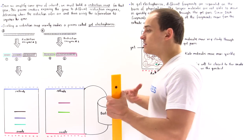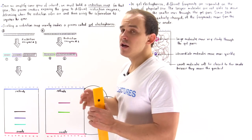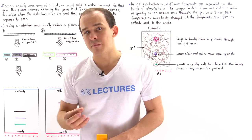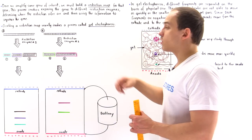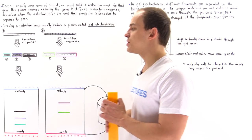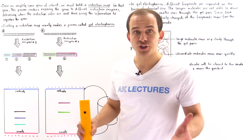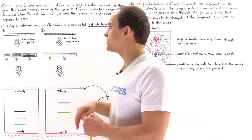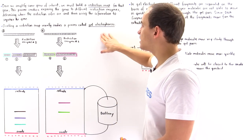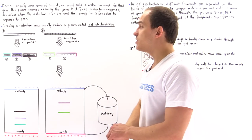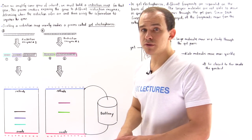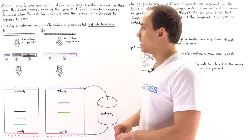What exactly is the procedure in creating the restriction map? Well, creating the restriction map involves a process known as gel electrophoresis, and this will be the focus of this lecture. So we're going to focus on the process of gel electrophoresis that is used in the creation of the restriction map for any particular gene.